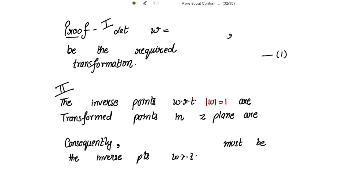Let's take our original transformation first. Let w = (az + b) / (cz + d) with the important condition that ad - bc ≠ 0. Let this be the required transformation. The inverse points with respect to the unit circle |w| = 1 are 0 and ∞. The corresponding transform points in the z-plane are: when w = 0, z = -b/a, and when w = ∞, z = -d/c.